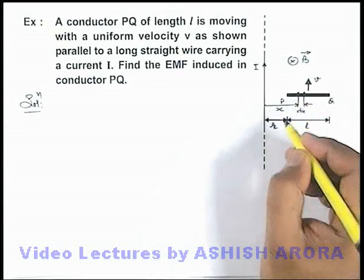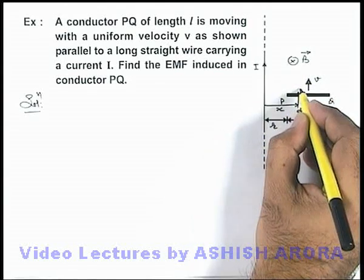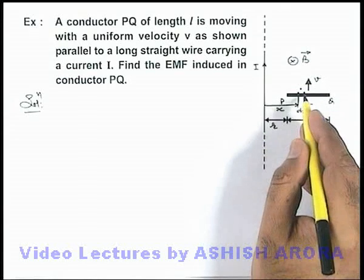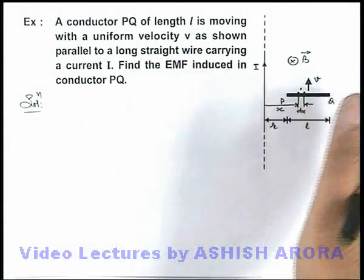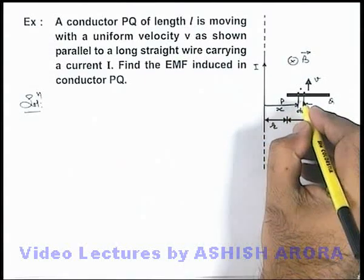For this small element dx which is also moving with velocity v, we can see the free electrons will experience some magnetic force towards the right by using the right hand palm rule. So this element dx...